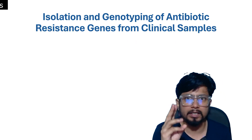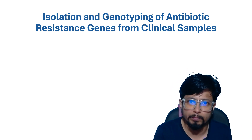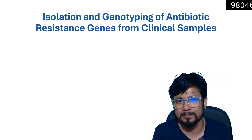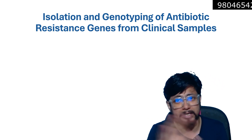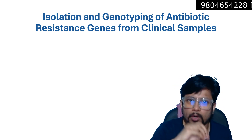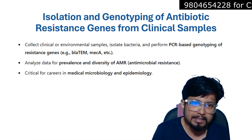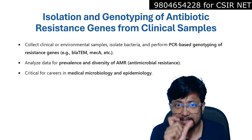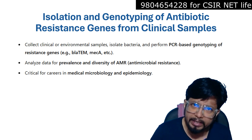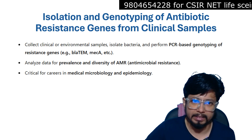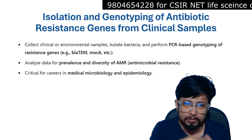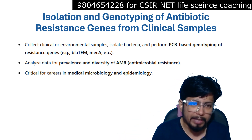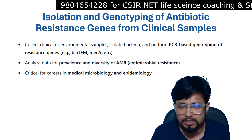The third topic is isolation and genotyping of antibiotic resistance genes from clinical samples. This is one of the most burning topics globally. You collect clinical or environmental samples, isolate bacteria, and perform PCR-based genotyping to find antibiotic resistance genes using wet lab techniques combined with bioinformatics tools like MLST and MECA. You then analyze the data for prevalence and diversity of antimicrobial resistance, or AMR.